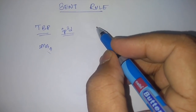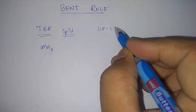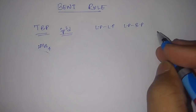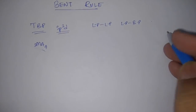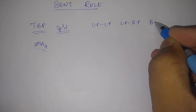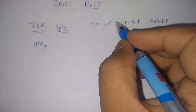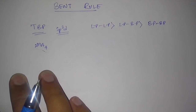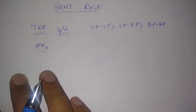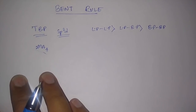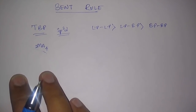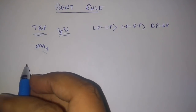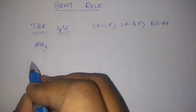In VSEPR theory we have three kinds of repulsion: lone pair–lone pair repulsion, lone pair–bond pair repulsion, and bond pair–bond pair repulsion. The intensity of lone pair–lone pair repulsion is highest, then comes lone pair–bond pair repulsion, and then bond pair–bond pair repulsion. The shape in which the repulsion is least is considered the most stable geometry.